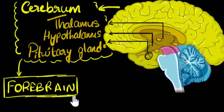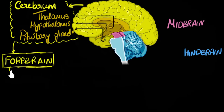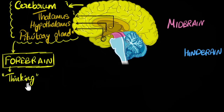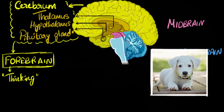What does the forebrain do? One of the things, as we already said, is voluntary functions. Digging deeper: one function is thinking — and that includes your learning ability, speech, language, all of that. The reason you're able to see this picture is because of your forebrain. The eyes send the signal to the brain, and it's your forebrain that does the processing. Similarly, you can hear right now because of your forebrain. All five senses — you can sense them because of your forebrain. So one important function of your forebrain is sensing.